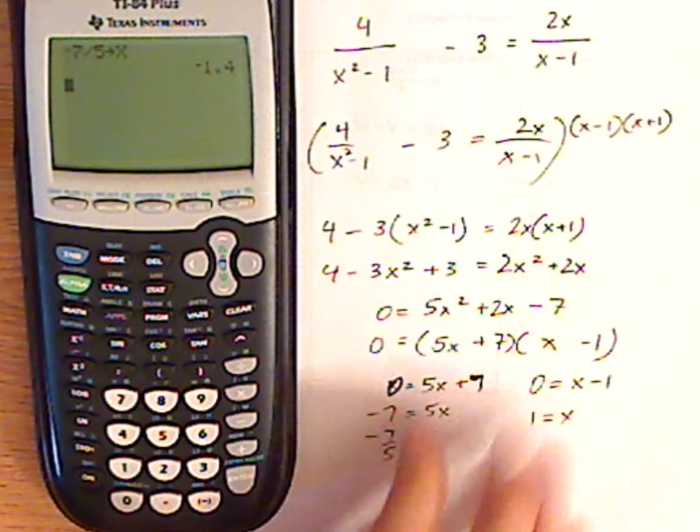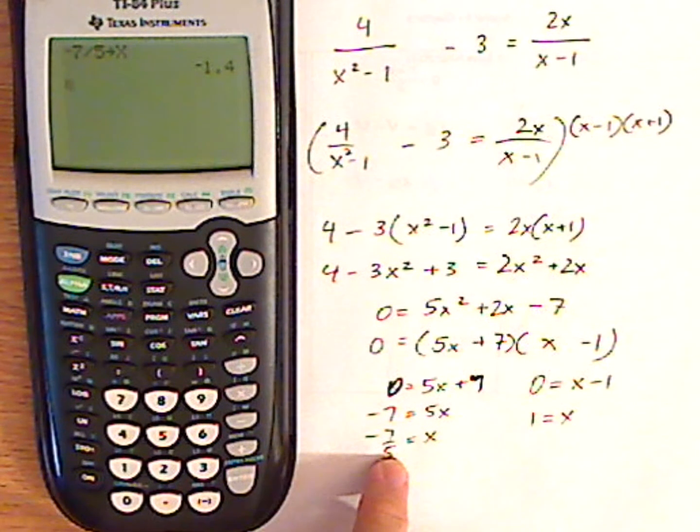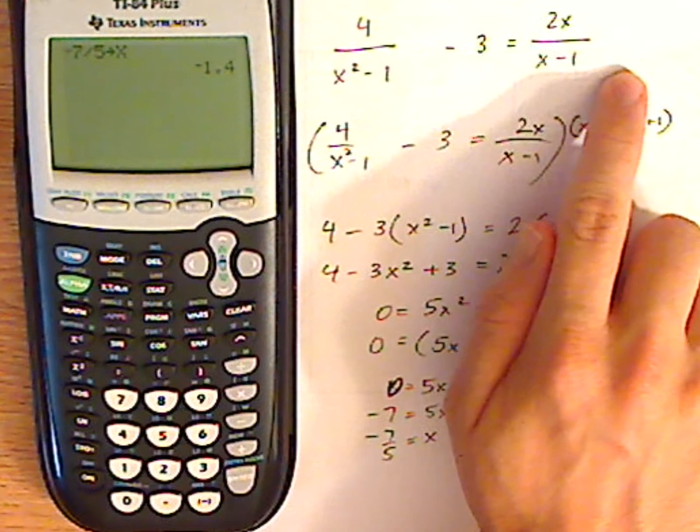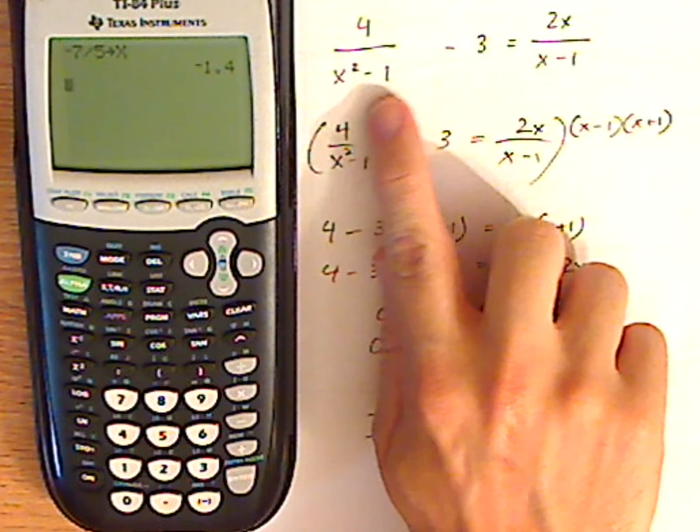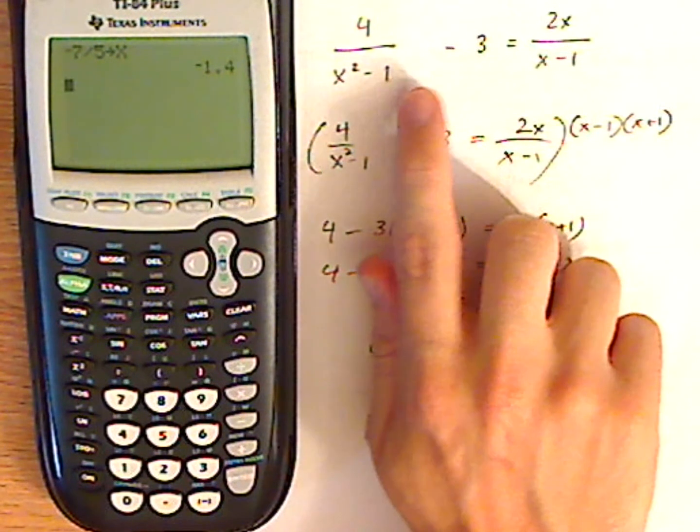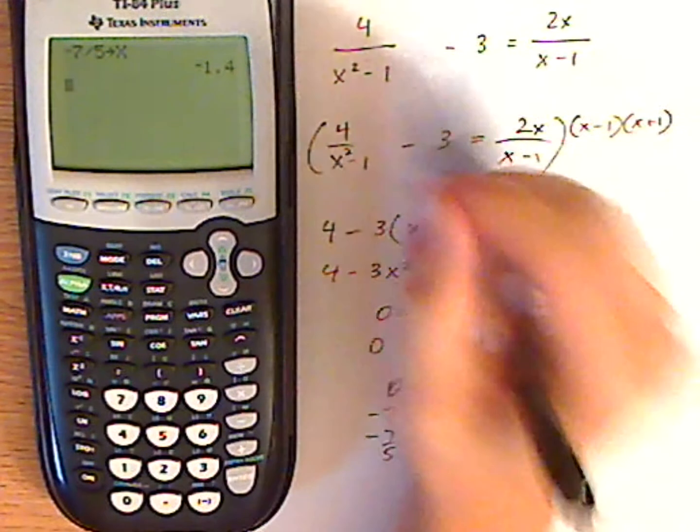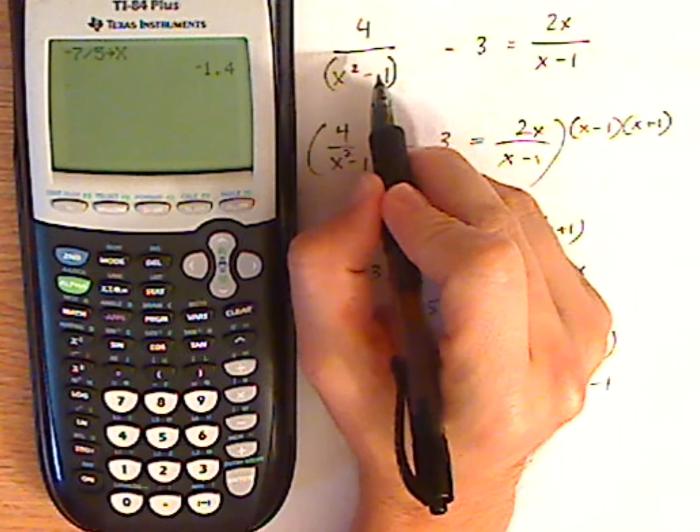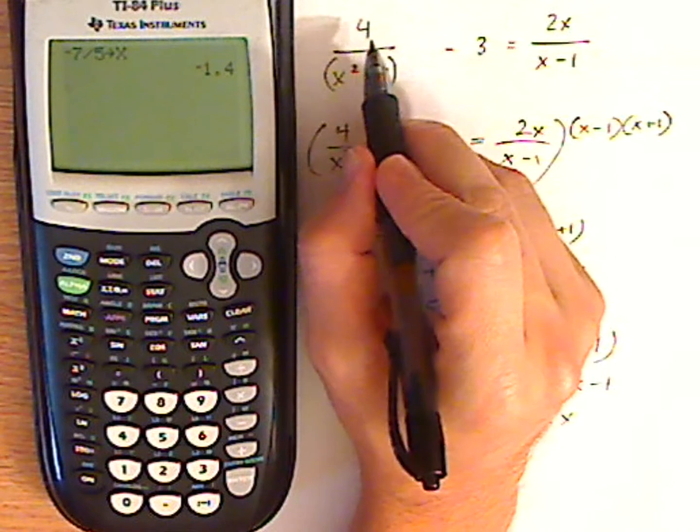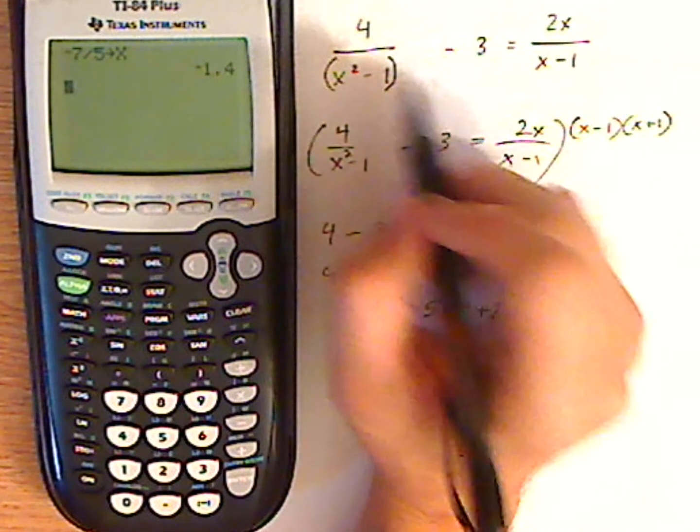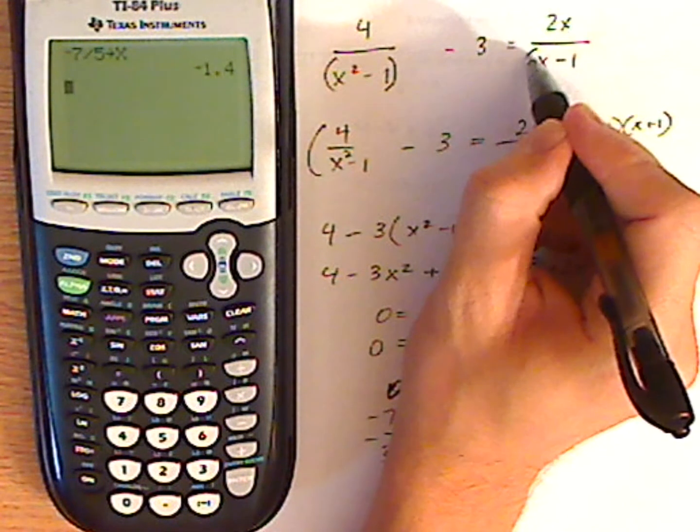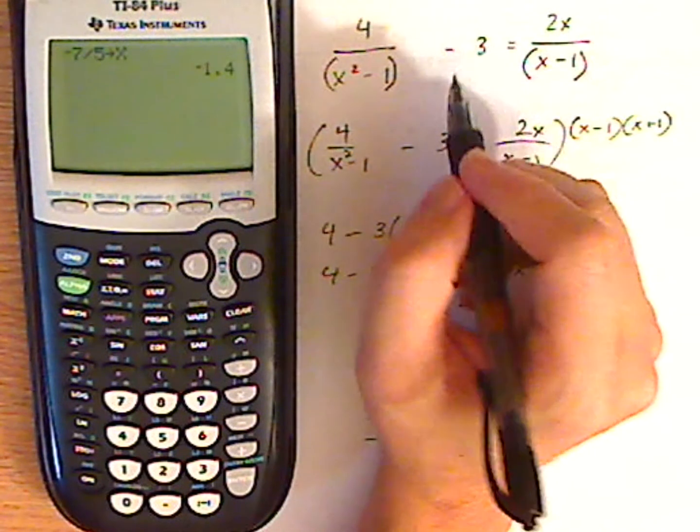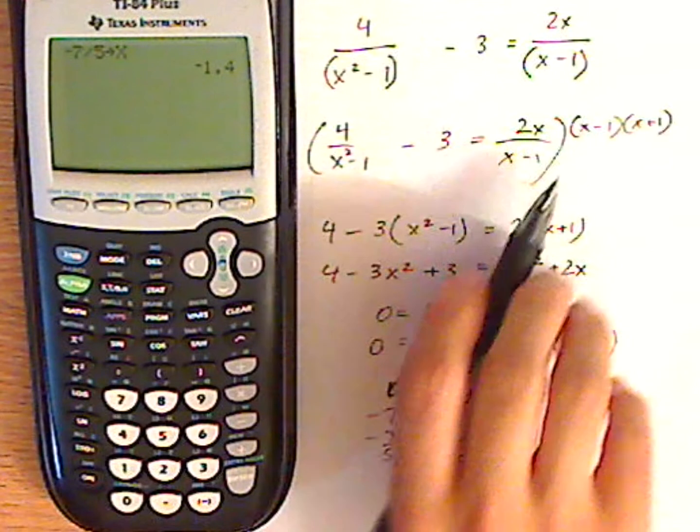Now, to check to see if negative seven-fifths is a solution, I'm going to type in the left side and then the right side separately. When I type in fractions like this, I want to put parentheses when necessary around the denominator or the numerator. Here's just one term, so I don't have to worry about that. Same thing over here, I'm going to put parentheses when I type in the denominator. So I do each side separately.